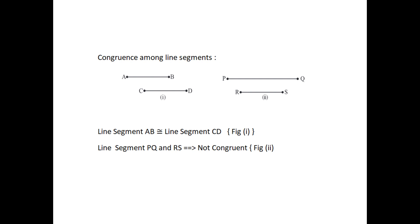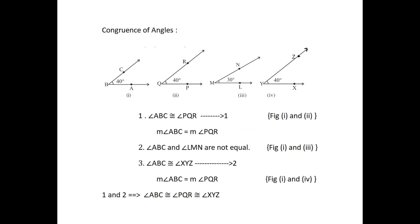In this figure, use the superposition method. Angle PQR matches exactly with angle ABC. That is, ABC and PQR are concurrent. The measurement of these two concurrent angles are the same. Next, try to superpose angle ABC and angle LMN. They do not cover each other exactly, so they are not concurrent.